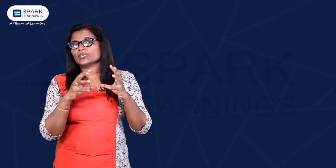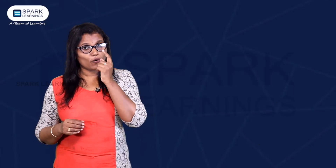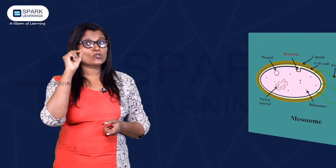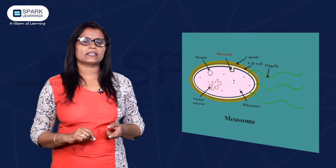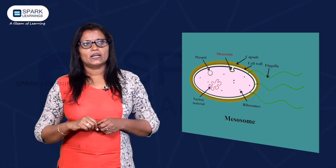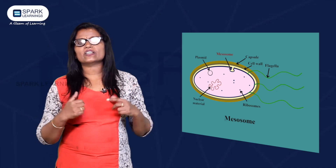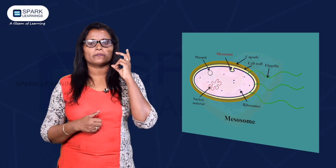The bacterial plasma membrane has some infoldings. These infoldings of the plasma membrane are called mesosomes. The function of the mesosome is to increase the respiratory surface area of bacterial cells.